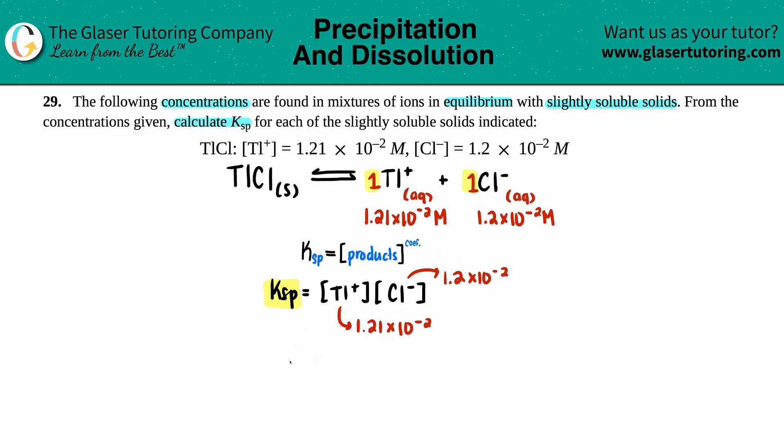So let's solve it out. Ksp equals we got 1.21 times 10 to the negative second and then 1.2 times 10 to the negative second. Plug this into the calculator and we get our answer: 1.21 times 10 to the negative second times 1.2 times 10 to the negative second, and I get 1.5 if we round it to two sig figs. I do have 1.452, but if we're playing the sig fig games, the lowest number is two sig figs, so 1.5 times 10 to the negative fourth. And you are done. That's the Ksp. Whoop whoop!